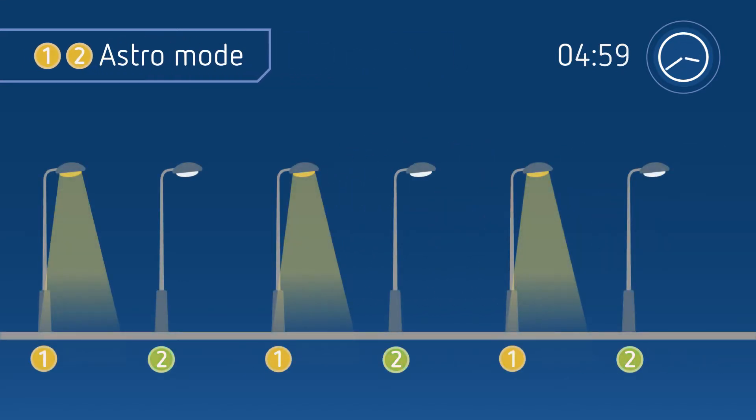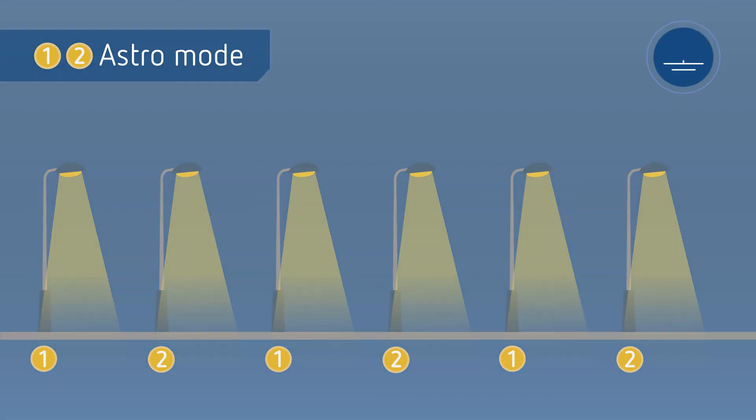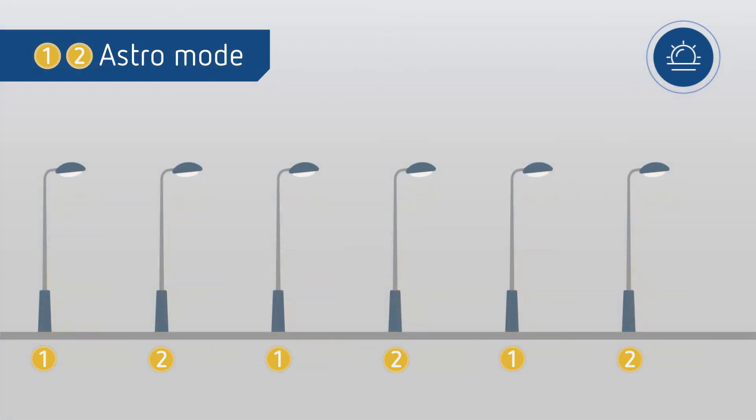At a specific time, channel 2 switches back to astro mode. At sunrise, all lamps are switched off.